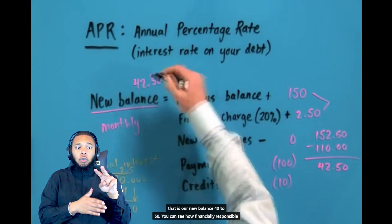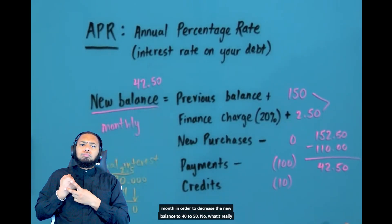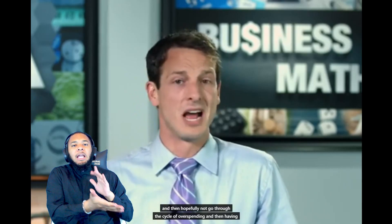You can see how financially responsible we were by not having any new purchases and putting a big payment down to decrease the new balance to $42.50. Now, you're still going to owe a 20% APR on $42.50 next month, so you'll still have a finance charge, but it will be less than $2.50. Perhaps you can cool it one more month, pay off all your debts, and have a clean $0 balance again — and hopefully not go through the cycle of overspending and finance charges, because finance charges are no good. You're paying that credit card company $2.50 because they loaned you money you didn't have. Make sure to pay off your balances as best you can, because APR will get you. Have a great day.